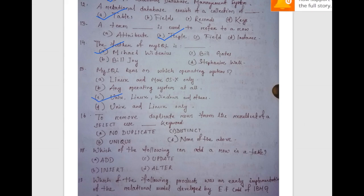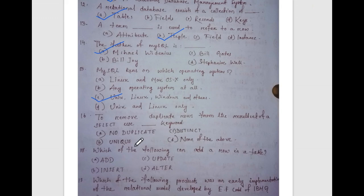To remove duplicate rows from the result set of a SELECT, which keyword is used? Options are: NO DUPLICATE, UNIQUE, DISTINCT, none of the above. The answer is DISTINCT.